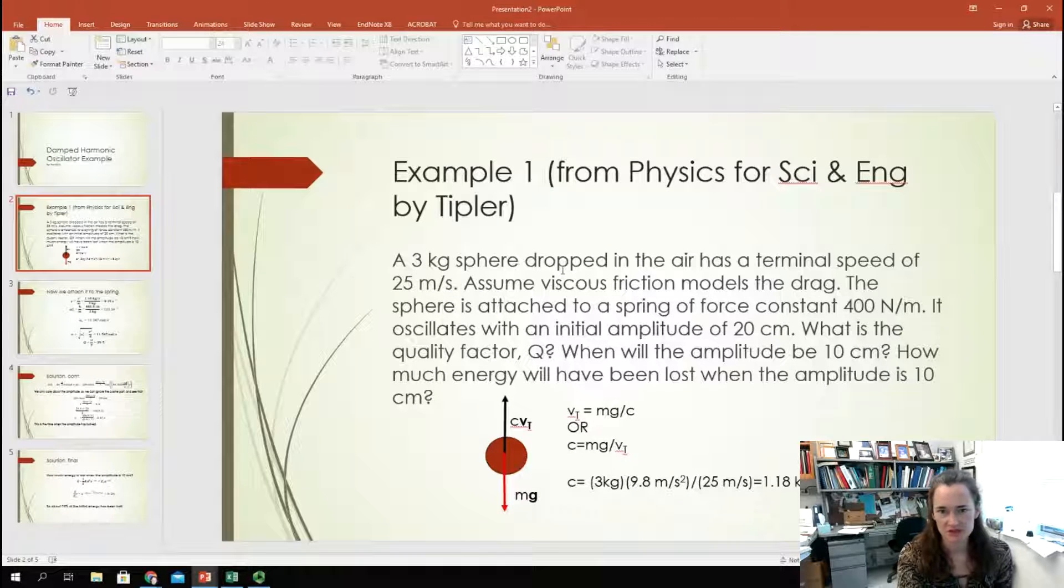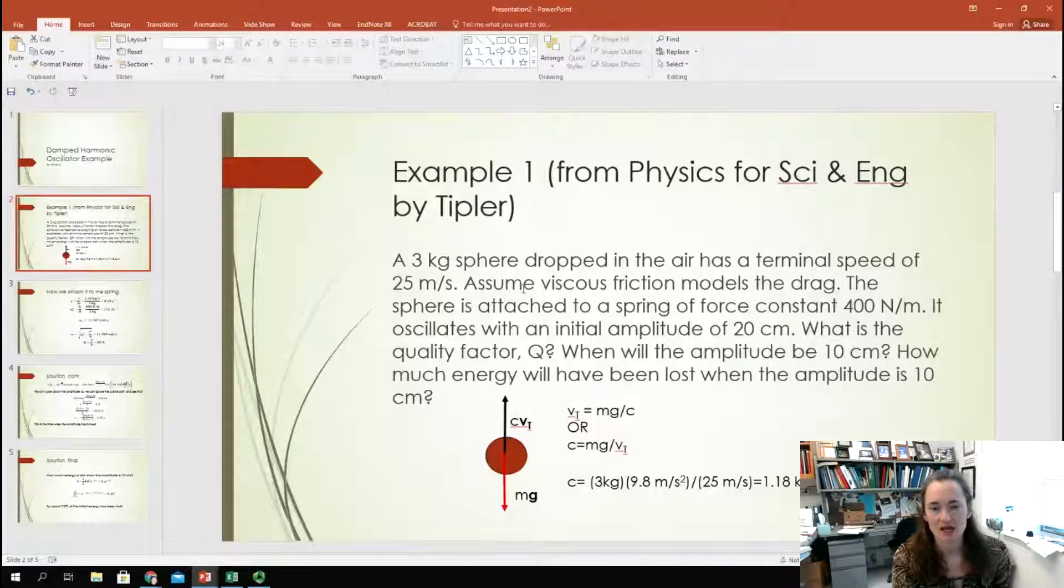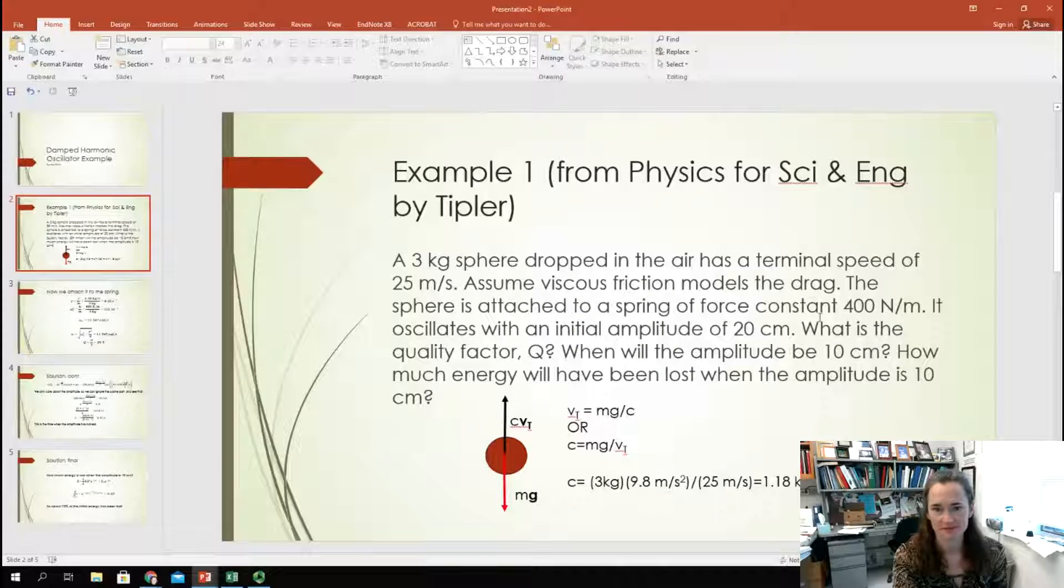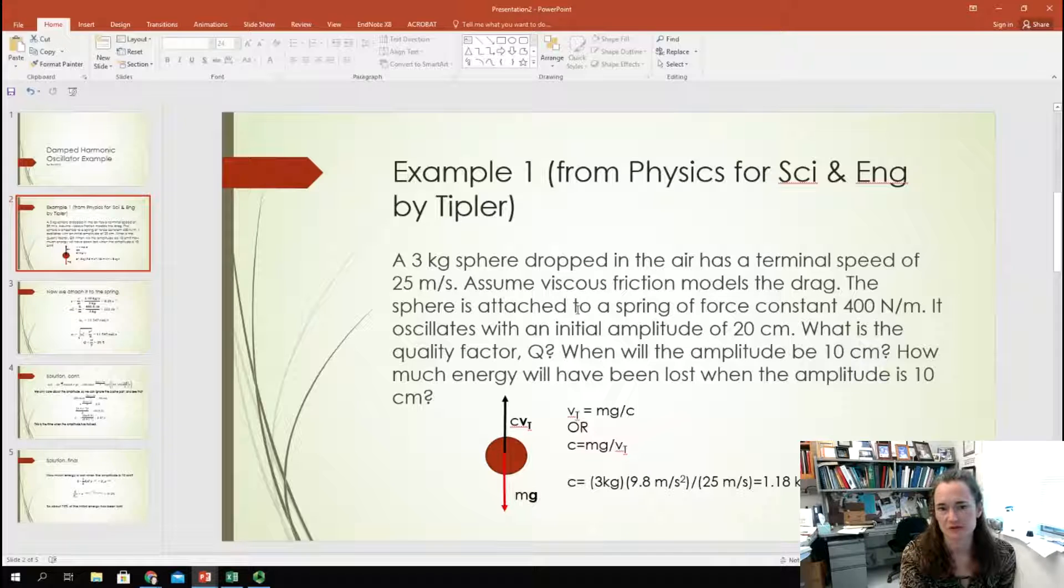You have a three kilogram sphere dropped in the air and it has a terminal speed of 25 meters per second. Assume that viscous friction models the drag for this sphere.